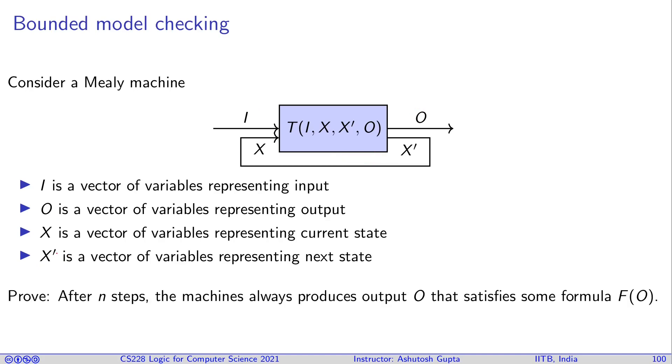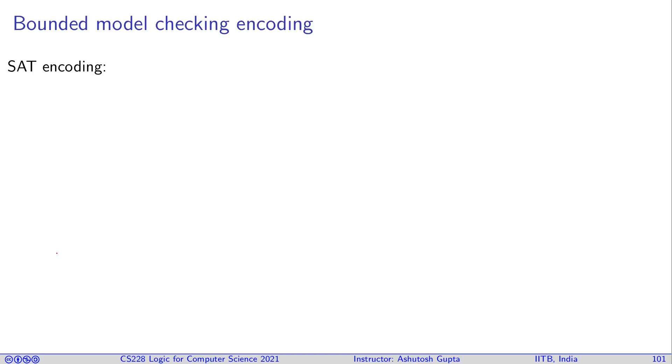So question is, after n steps, does the machine always produce output O that satisfies some formula F_O? So you want outputs to satisfy certain constraints. So what would be your SAT encoding? How can this problem be turned into a SAT problem?